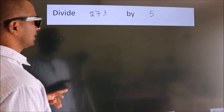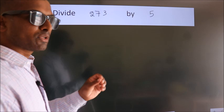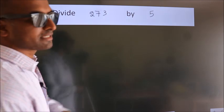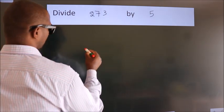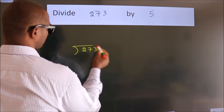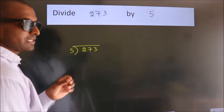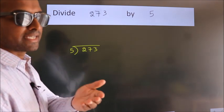Divide 273 by 5. To do this division, we should frame it in this way: 273 here, 5 here. This is your step 1.